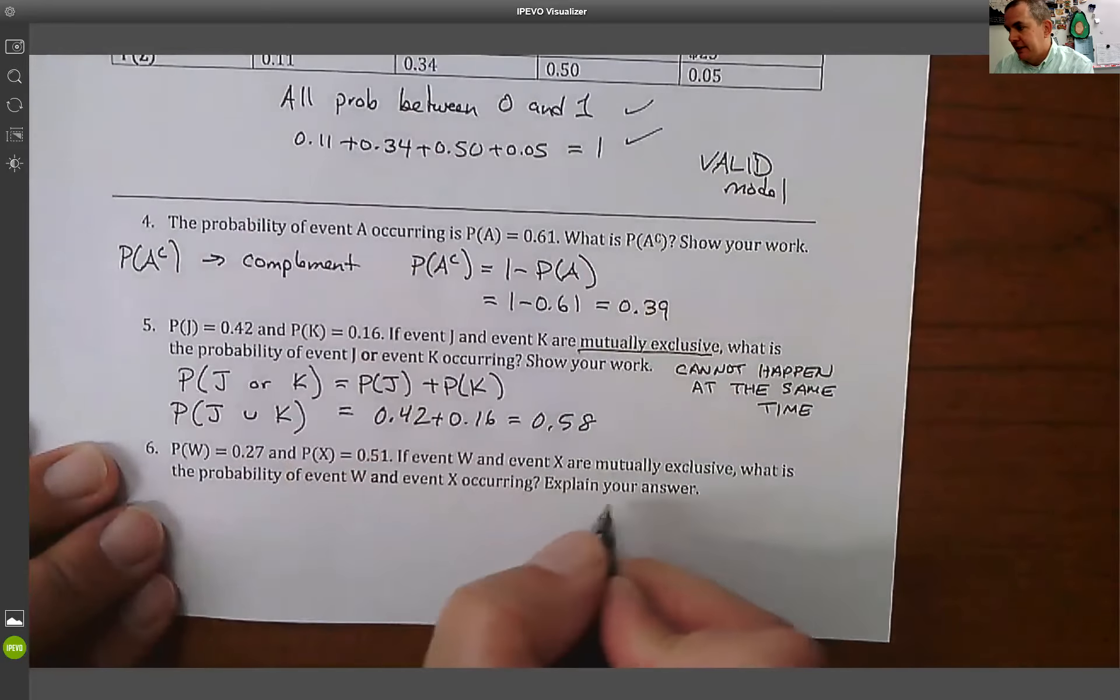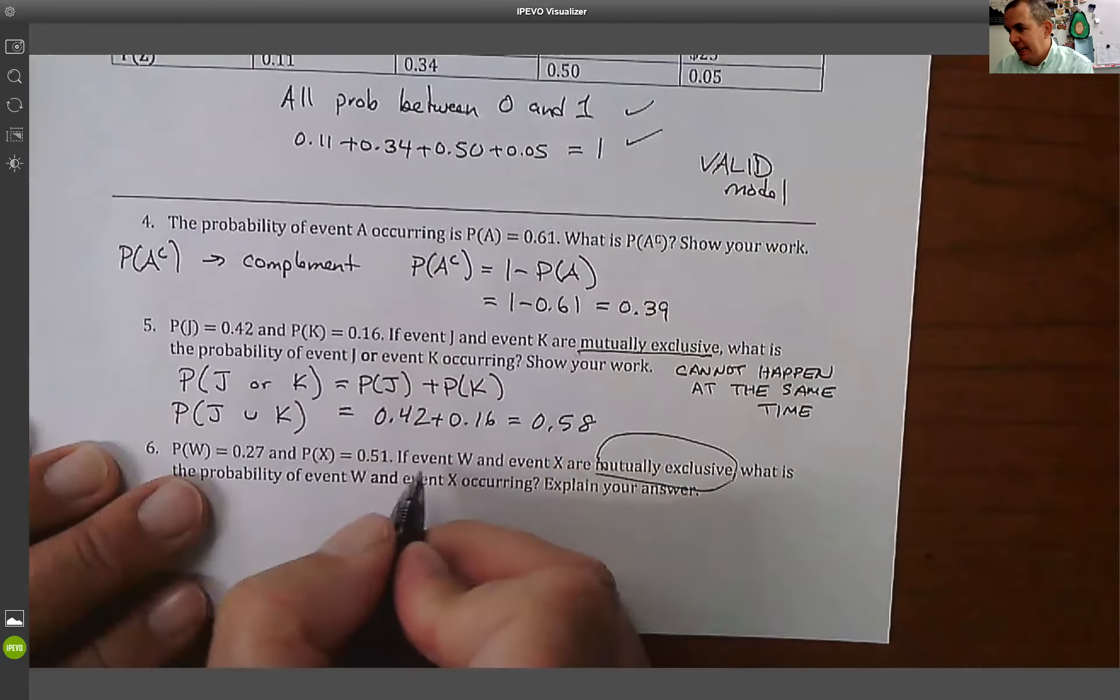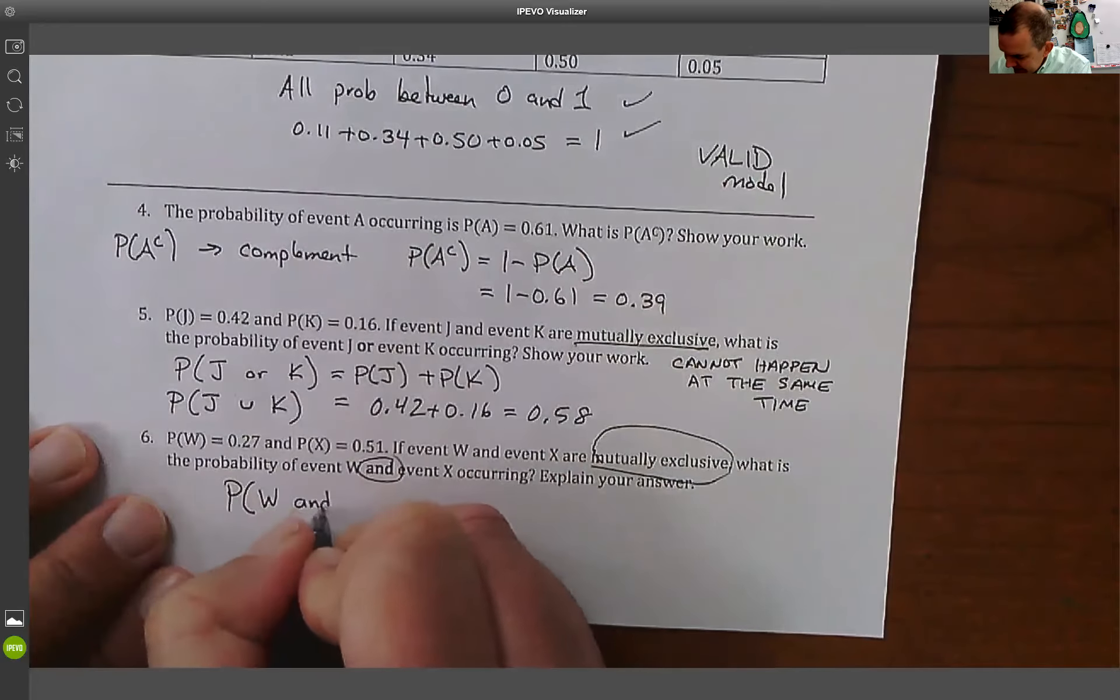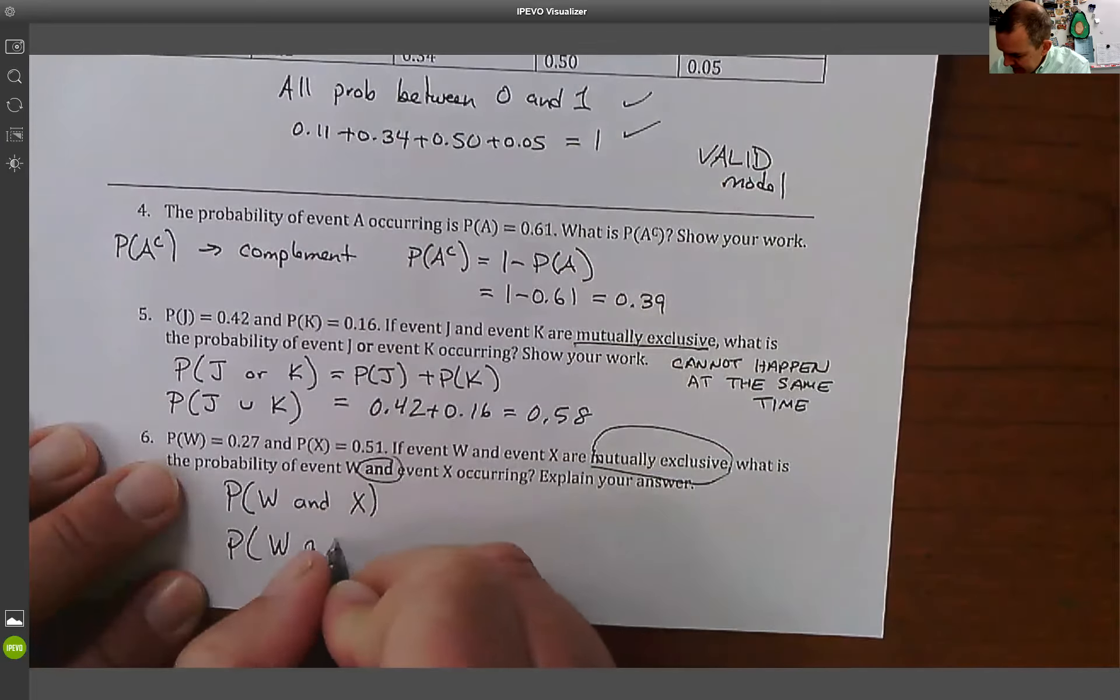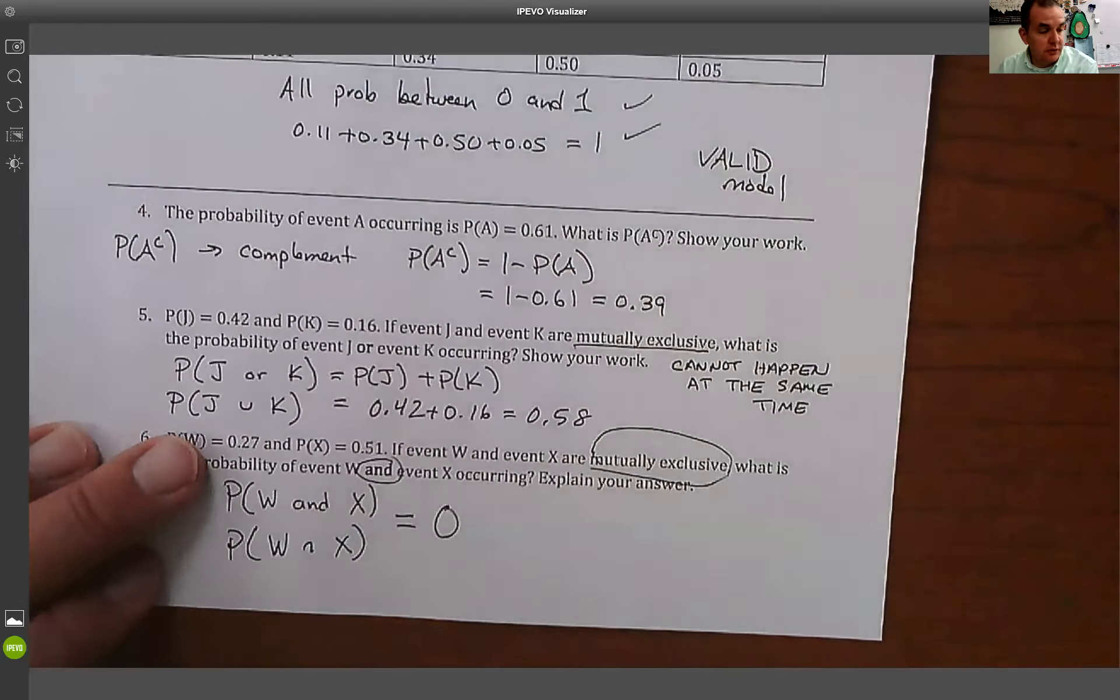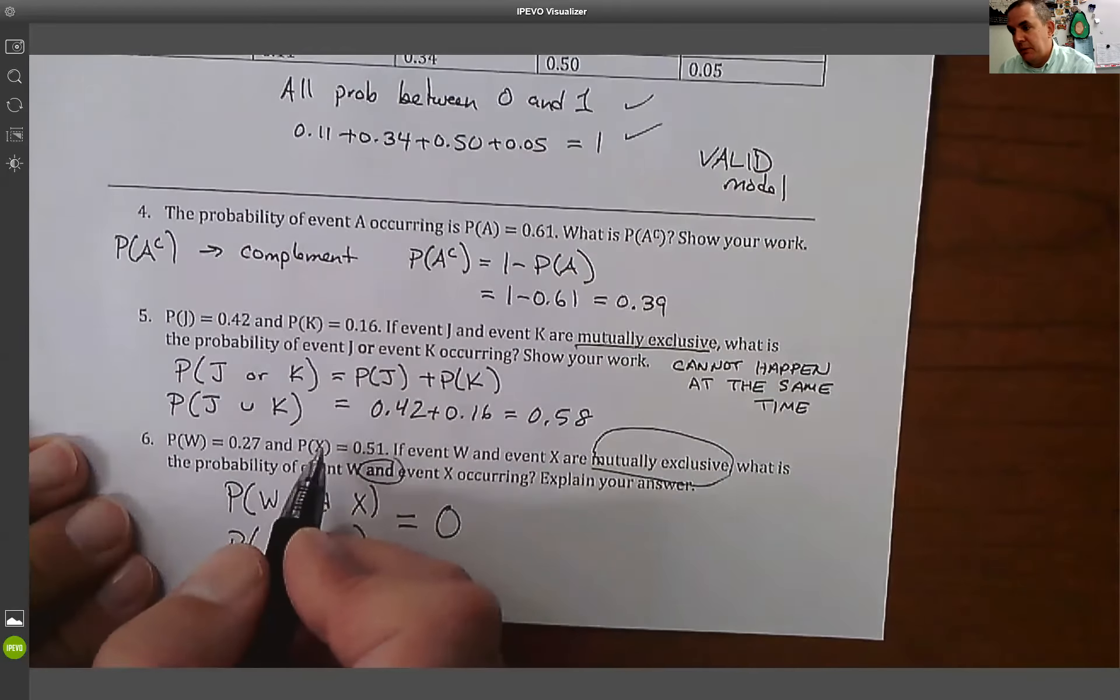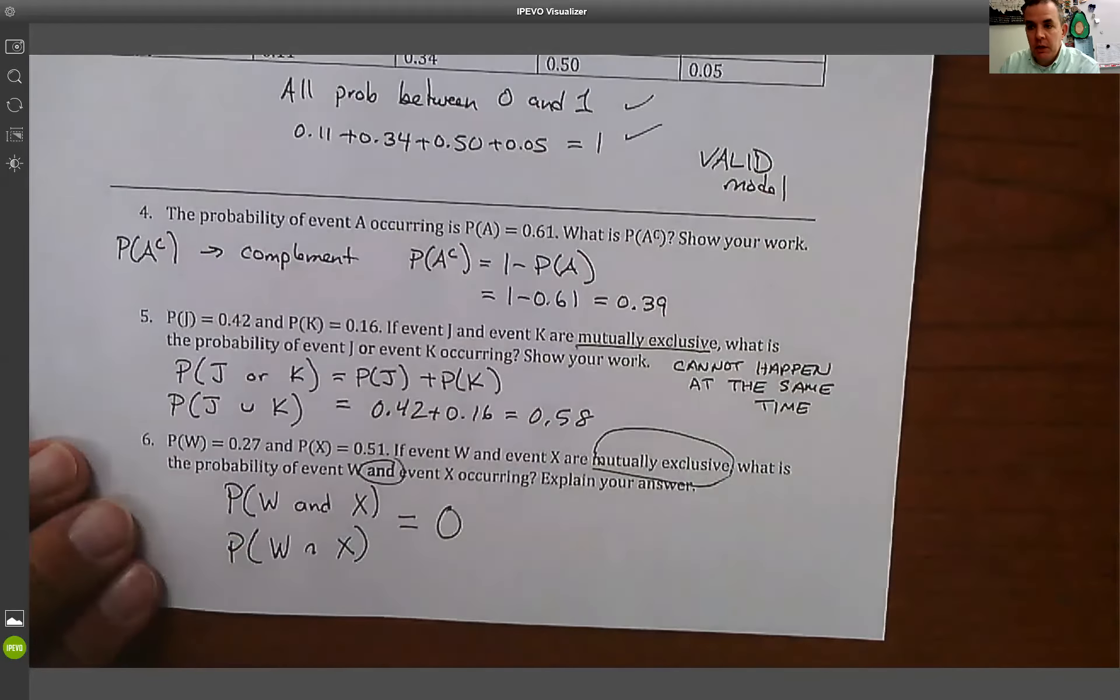Now this one again says mutually exclusive, and what we're saying is an 'and'. This is saying them happening at the same time. So the probability of W and X, or the probability of W intersect X. In this case, they're equal to zero because mutually exclusive says they cannot happen at the same time. Like, the probability of being a junior is 0.27, the probability of being a senior is 0.51. What is the probability of me picking one person and that person being both a junior and a senior? It's impossible.